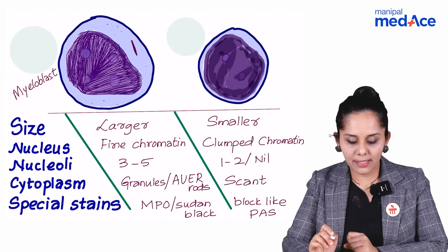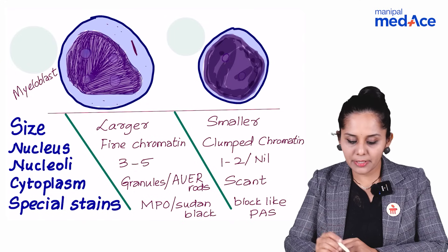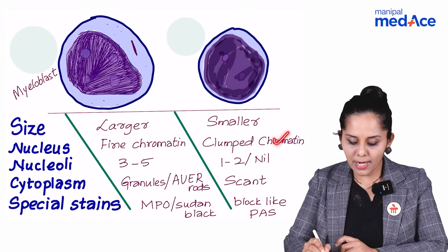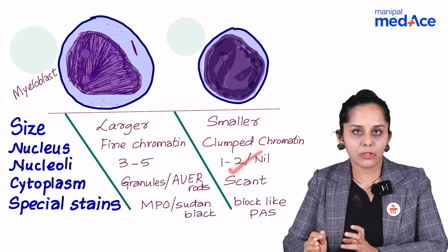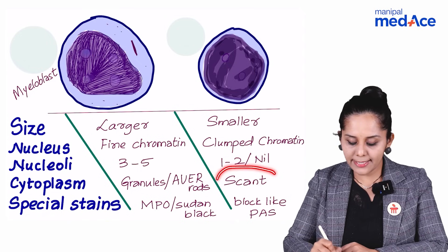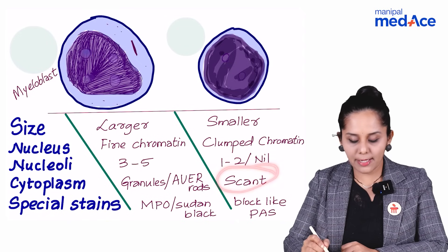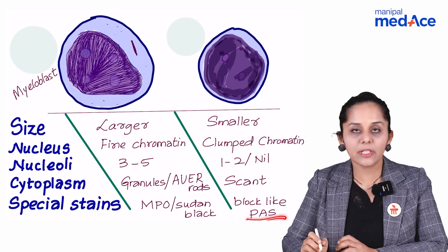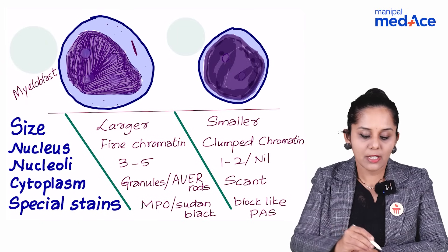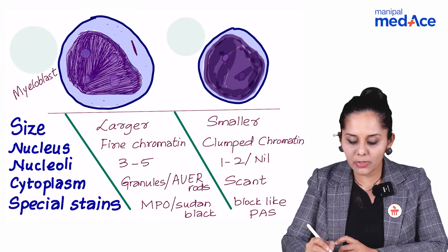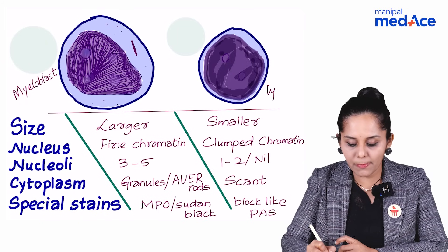The second cell is slightly smaller with clumped chromatin, one to two prominent nucleoli or sometimes nil nucleoli. It has very scant cytoplasm and block-like positivity if you do a PAS stain. The cell I am talking about is a lymphoblast.